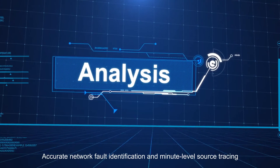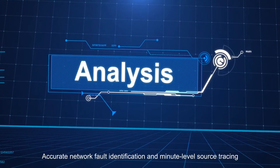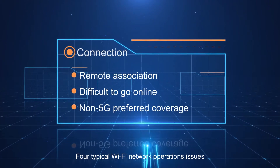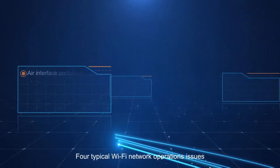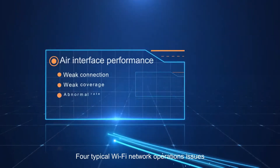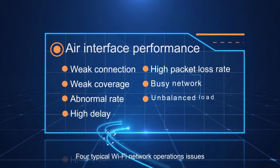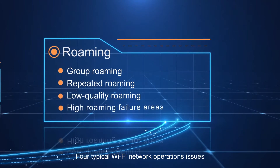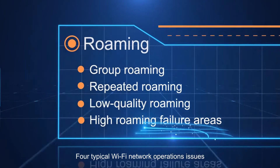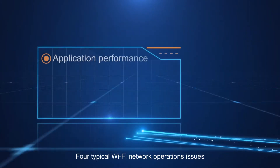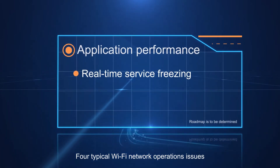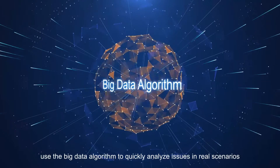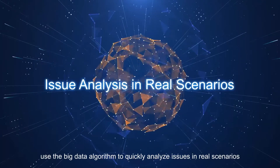Accurate network fault identification enables minute-level source tracing. There are four typical Wi-Fi network operations issues: connection, air interface performance, roaming, and application performance. For common problems, the big data algorithm is used to quickly analyze issues in real scenarios.